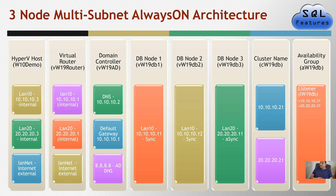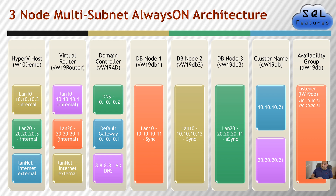We'll create a cluster named CW19TV. As it's a multi-site cluster, you'll have one IP per subnet — 10.10.10.21 and 20.20.21. Finally, we'll create an availability group on top of that. The listener will need a separate IP, and the listener is what clients connect to — all application servers will connect to the listener. At any point in time, depending on which node is the primary, the listener will point to either the first or second subnet.